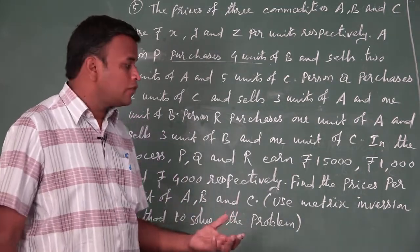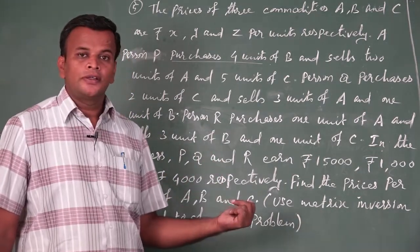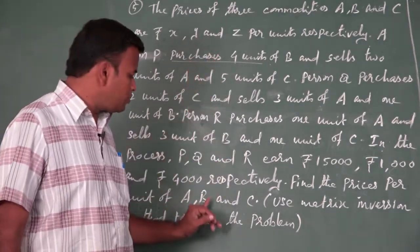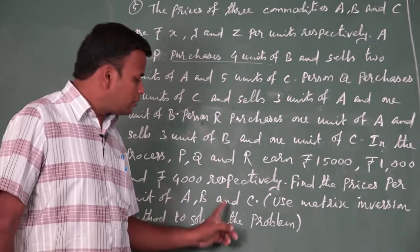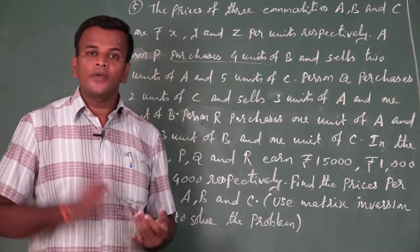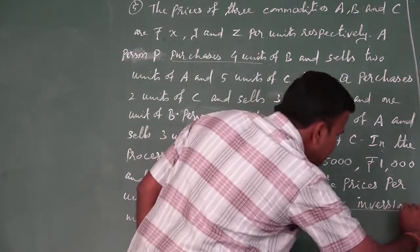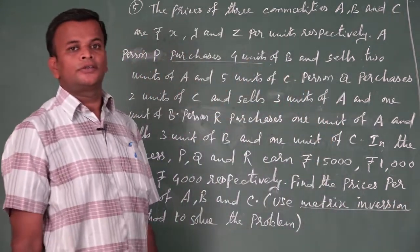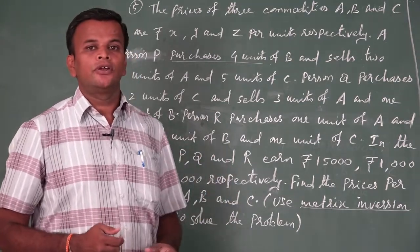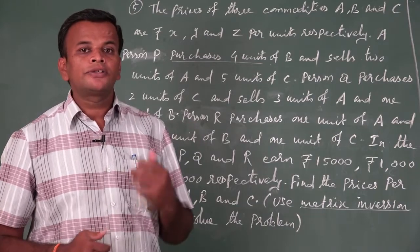We need to find the prices of each and every unit of A, B and C - that is, to find the value of X, Y and Z - using the matrix inversion method.